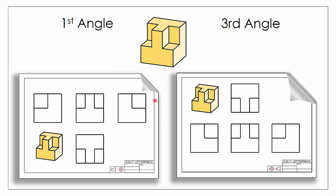Now let's look at our object from the top. From above the object in first angle, we can see our plan view is appearing below our front elevation, which is our primary view. In third angle, however, our plan view appears above the object. So in spite of being the same view, this appears below whereas this appears above our front elevation.